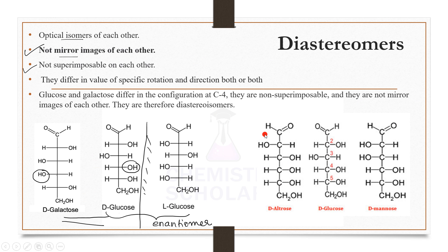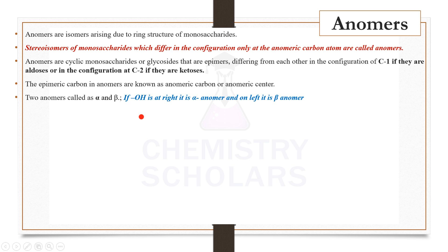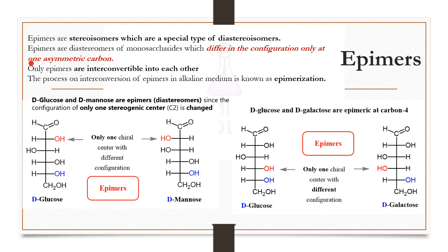Comparing glucose with allose, they are diastereomers differing at the first and second carbon atoms. Comparing D-glucose and D-mannose, they differ at only one carbon, with the rest of the structure the same. This gives rise to the next type of stereoisomers called epimers, which are special types of diastereomers where the two structures differ at only one asymmetric carbon atom. Because they differ at one asymmetric carbon atom, they are interconvertible, and this process of interconversion is called epimerization.